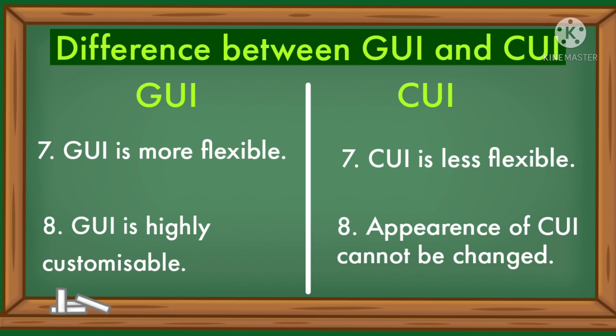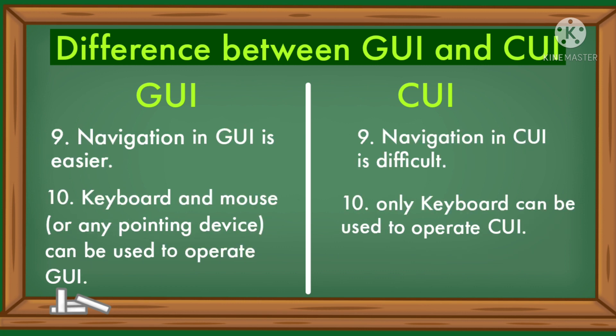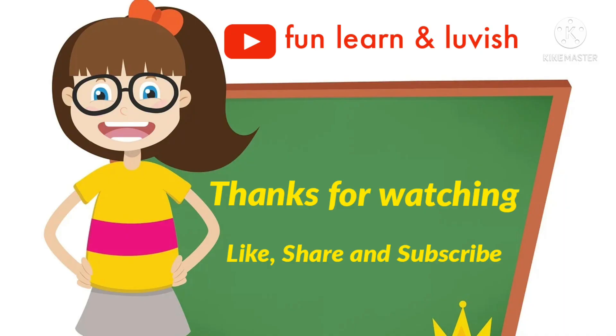GUI is highly customizable, whereas the appearance of CUI cannot be changed. Navigation in GUI is easier; navigation in CUI is difficult. Both a keyboard and a mouse or any pointing device can be used to operate GUI, while only a keyboard can be used to operate CUI.